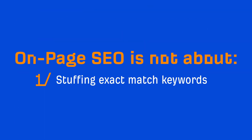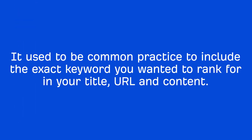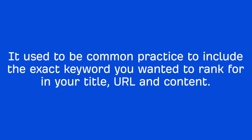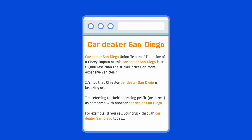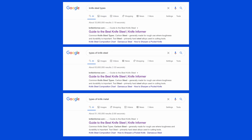Number 1: on-page SEO is not about stuffing exact match keywords. It used to be common practice to include the exact keyword you wanted to rank for in your title, URL, and content. For example, if you wanted to rank for "car dealer San Diego," you would stuff that keyword throughout your page despite the fact it doesn't make sense grammatically speaking. Google is smart enough to understand things like connecting words, synonyms,